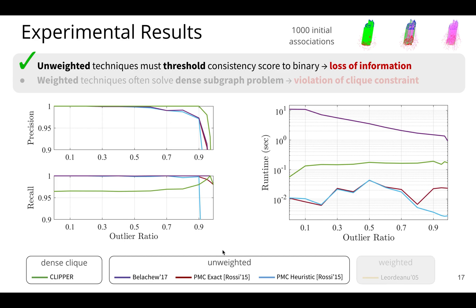Belachew is essentially a binary version of Clipper. PMC or Parallel Maximum Clique, both exact and heuristic, are used in the state-of-the-art teaser point cloud registration algorithm and is able to use up to 24 cores to solve maximum clique. And we see already that the weighted formulation is able to maintain higher precision for longer, while the binary, by thresholding this information, we lose some information and the performance starts degrading around 60% outlier regime.